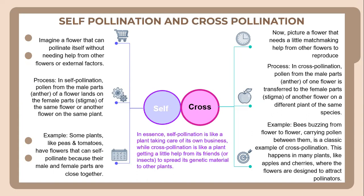In conclusion, self-pollination is like a plant taking care of its own business, while cross-pollination is like a plant getting a little help from its friends when it needs to spread its genetic material to other plants.